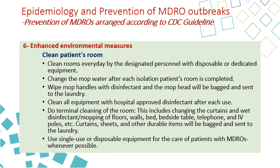Perform terminal cleaning of the room after patient discharge or death. This includes changing and disinfecting floors, walls, bed, bedside table, telephone, IV poles, and all other high-touch areas. Curtain sheets and other durable items should be bagged and sent to the laundry for cleaning. Durable equipment used between patients — such as ABG machines and X-ray machines — should be cleaned with hospital-approved disinfectant before use on another patient. Keep all items including dressings, syringes, and IV poles to a minimum within the room. After patient discharge, these items should be discarded. Keep linen in water-soluble bags and send to the laundry for cleaning and disinfection as per hospital policy.